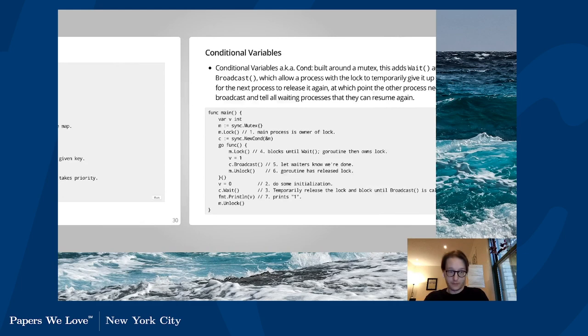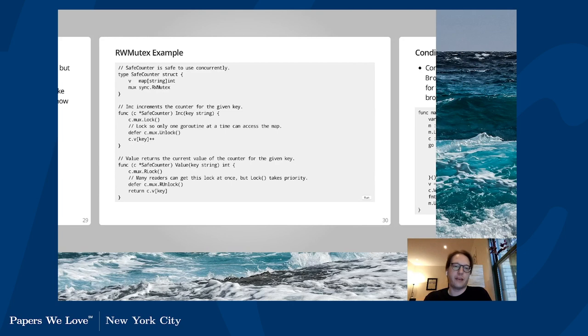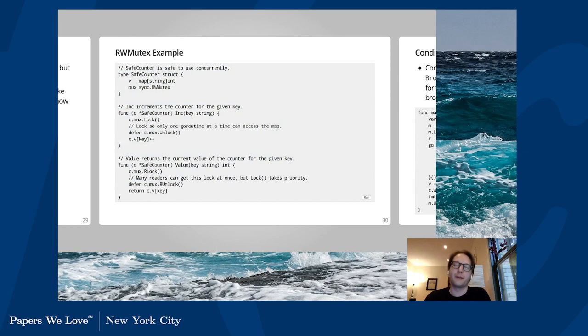Conditional variables — also known as Cond — are built around a mutex. They add Wait and Broadcast. The idea is: you have a mutex, the main process grabs the lock, fires off a goroutine, does some initialization and then calls Wait — which releases the lock and blocks until Broadcast is called. Meanwhile, the goroutine blocks until Wait is called and then can get the lock, does a change to the shared variable, fires off Broadcast to let the waiters know it's done, and then unlocks. Cond can be confusing because it's a semaphore for marking that some condition has been reached, but it doesn't itself maintain that condition.